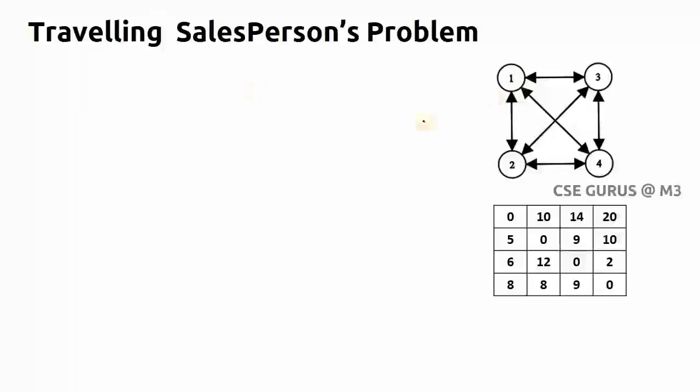This is the traveling salesperson's problem. Here it is given - for example, let us suppose I am starting at one city, I need to visit the remaining cities exactly once and come to the original version. In this tour it is given in terms of adjacency matrix - what is the distance cost: 1 to 1 is 0, 1 to 2 is 10, 1 to 4, it is a directed graph, 2 to 1 is 5, like this. There are 4 vertices: 1, 2, 3, 4.